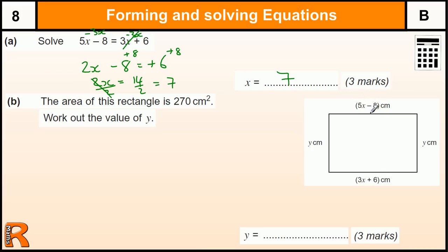Now, the 5x minus 8 and 3x plus 6 are the two values from this equation. Because this is a rectangle and these two values are opposite each other, they must be equal. We've already solved what x is - we found that x equals 7. So I can replace that in here.